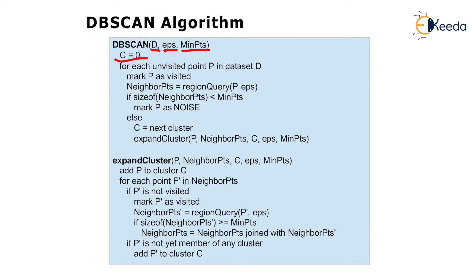Initially we set cluster count C to zero. For each unvisited point P in dataset D, mark P as visited. Neighborhood points equals region query (P, eps). If the size of neighbor points is less than minimum points, mark P as noise. Otherwise, increment the cluster and apply expand cluster with parameters: point P, neighbor points, cluster C, eps, and minimum points.